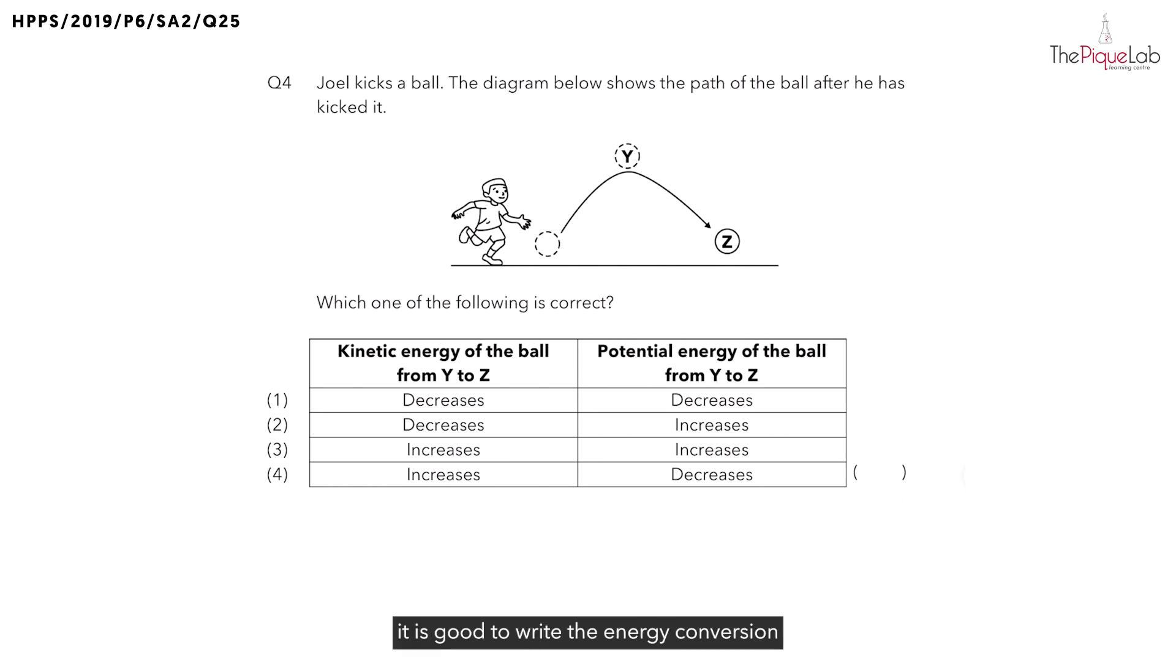To start off this question, it is good to write the energy conversion after Joel has kicked the ball, and the ball moves to position Y and finally moving down to position Z. Let's begin with Joel kicking the ball.